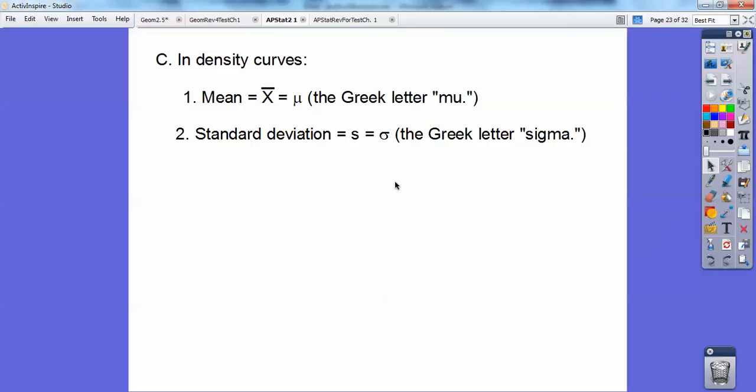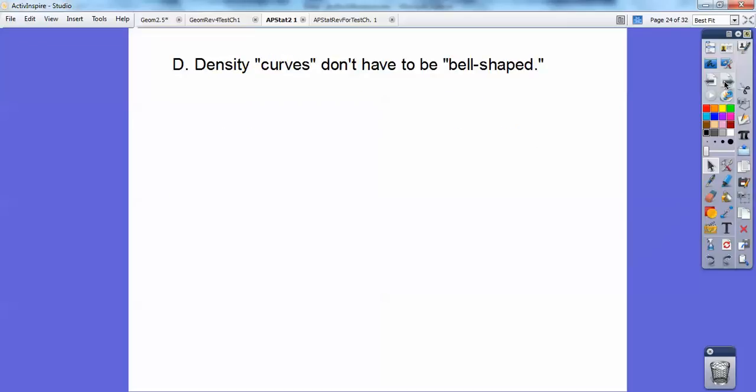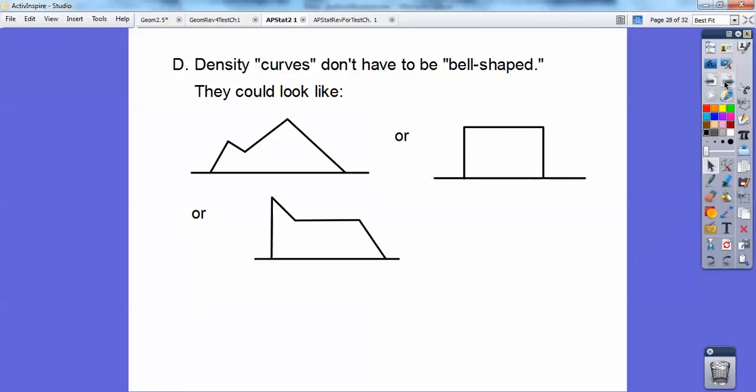It's kind of like a funny R with a little extra hook around to it, a smaller case R. Greek letter sigma. Density curves don't have to be bell-shaped. They could look like that, or like that, or like that. They just have to be above the x-axis and have a total area of 1.